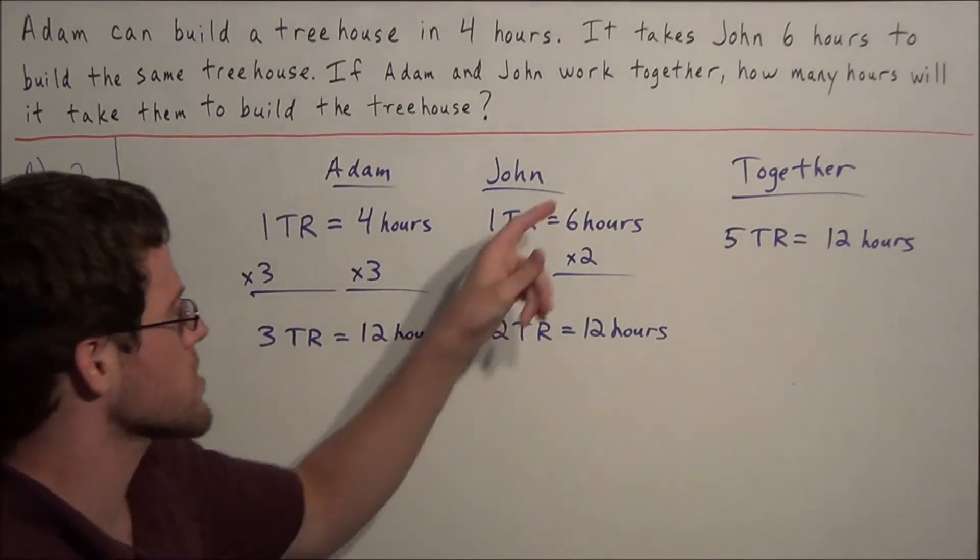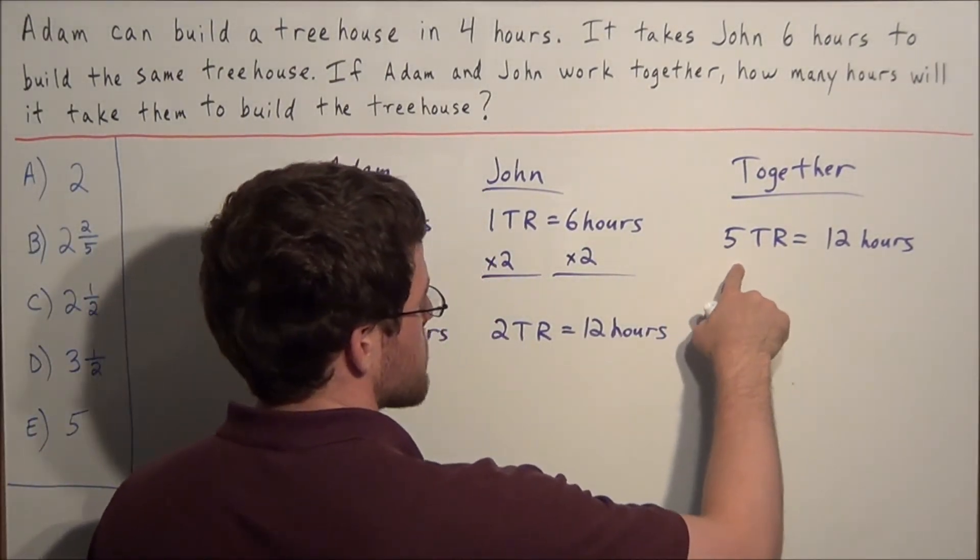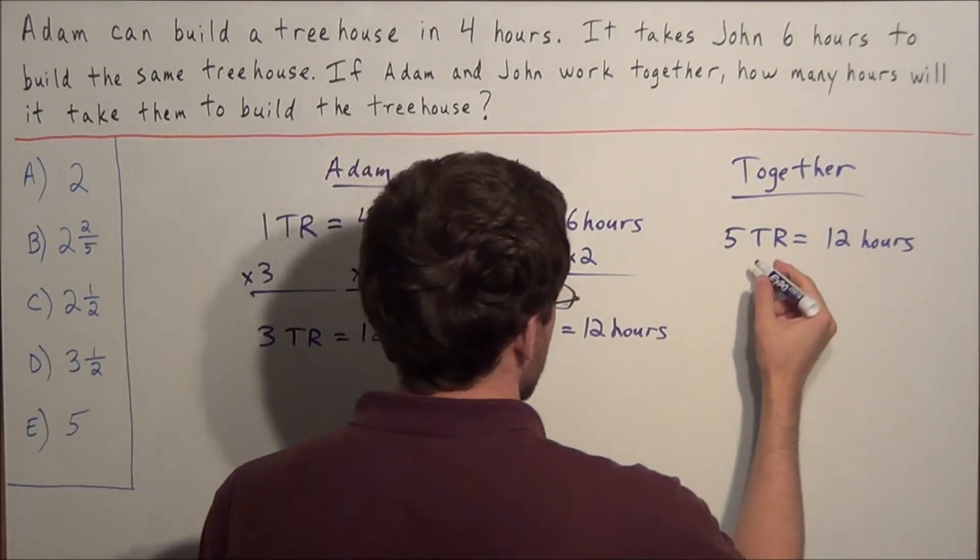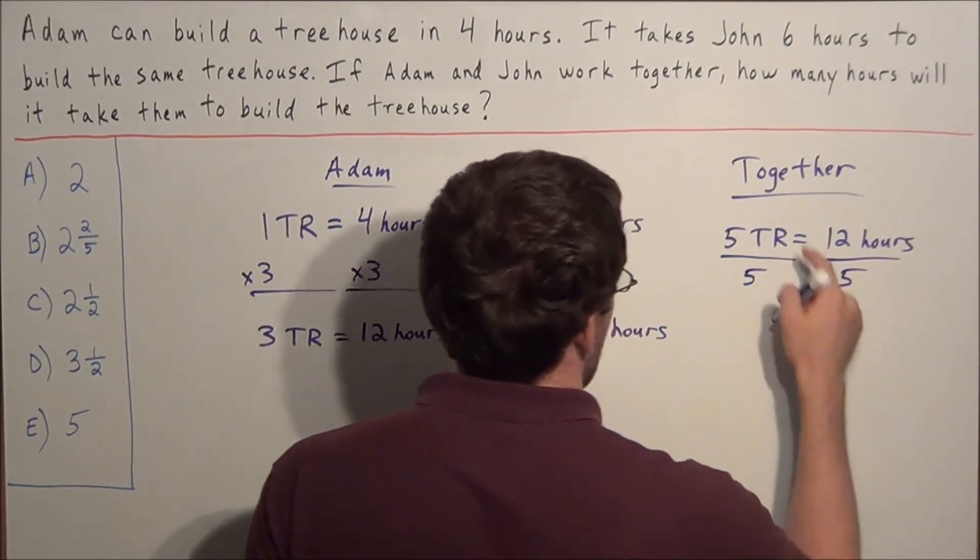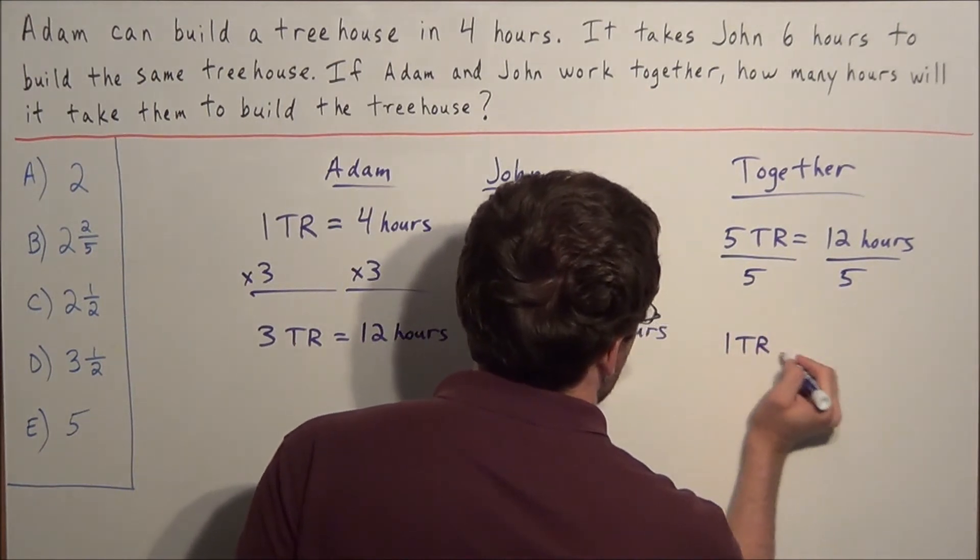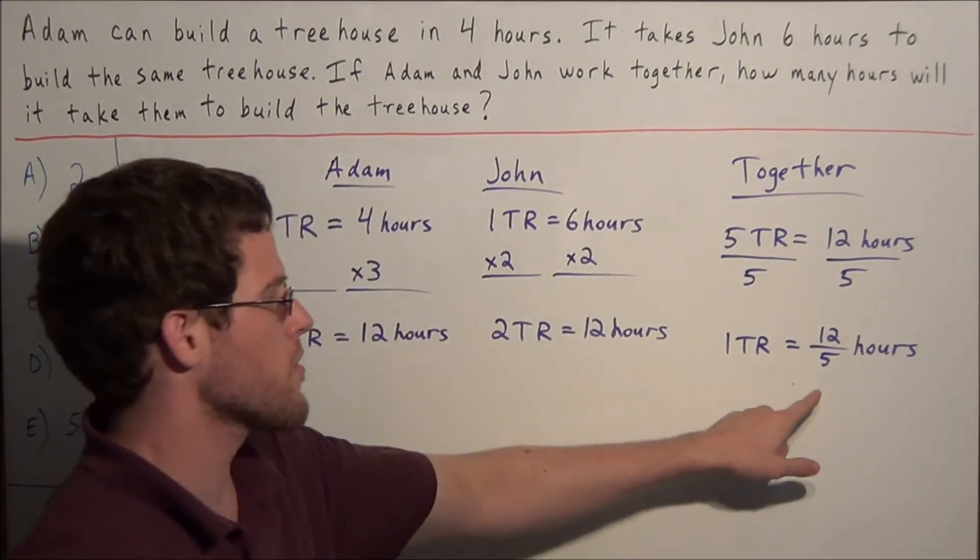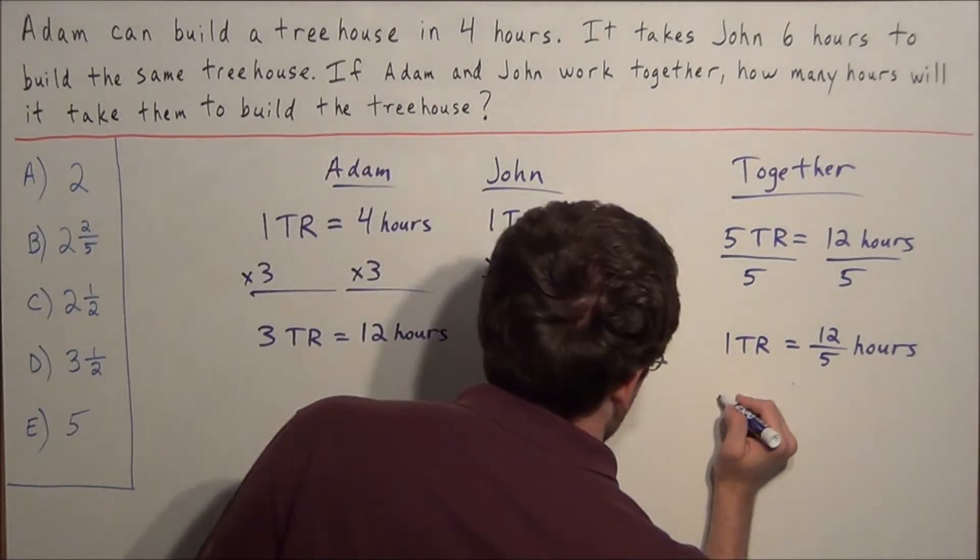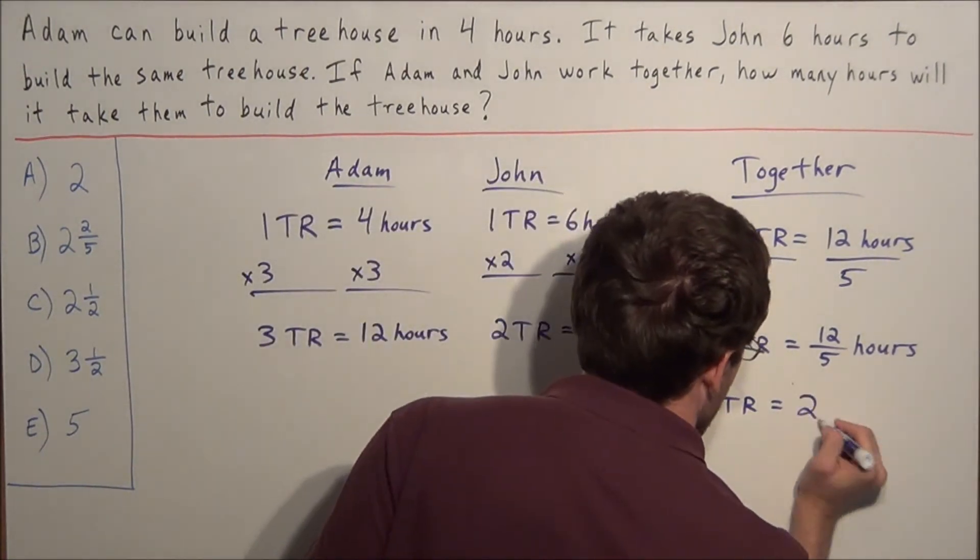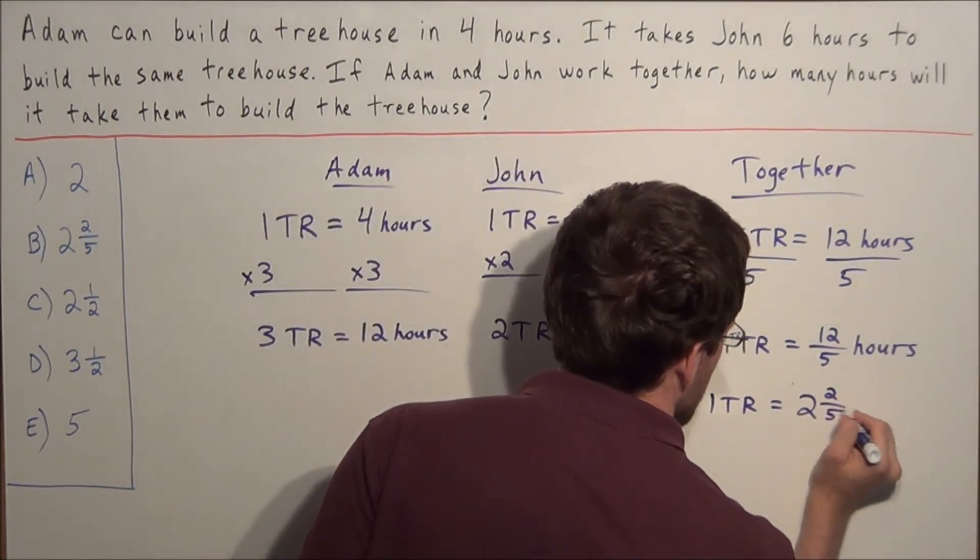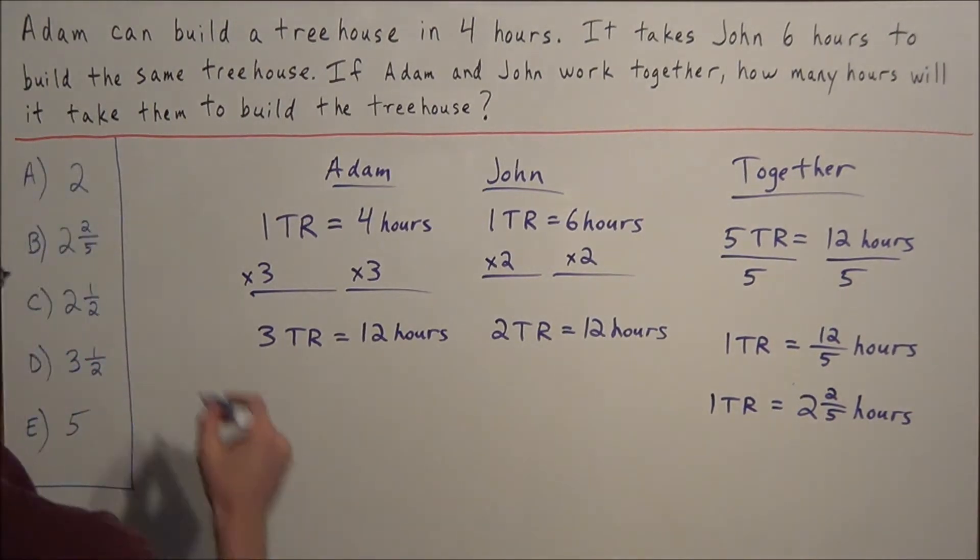So we have they build five treehouses together in twelve hours. But what we're trying to answer is how many hours will it take them to build one treehouse. So for this equation here, we're going to divide both sides by five. So we divide the left hand side by five and the right hand side by five. Now we know that together they build one treehouse in twelve over five hours. Now we convert this improper fraction into a mixed number. Five goes into twelve twice and has a remainder of two. So we have two and two fifths hours, which we can match to answer choice B.